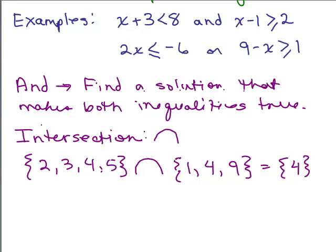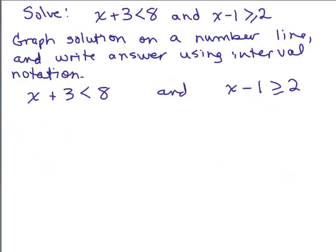So 'and' and intersection go together. We're going to solve this problem: x plus 3 is less than 8 and x minus 1 is greater than or equal to 2. We're going to graph it on a number line and then write our answer using interval notation. If you need a review on interval notation, look at my videos on interval notation. If you need a review on how to solve a regular inequality, look at my videos on inequalities.